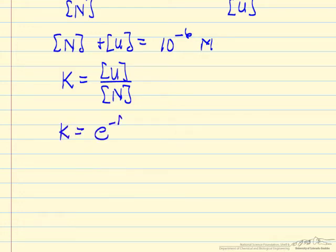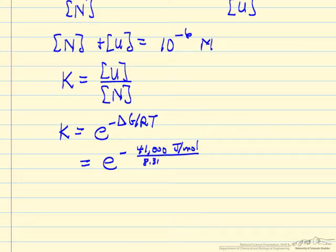The equilibrium constant equals e to the negative delta G divided by the gas constant and temperature. We can calculate K because we are given delta G as 41,000 joules per mole, the gas constant is 8.314 joules per mole per kelvin, and the temperature must be absolute temperature: 273 plus 25, so 298 kelvin. This equals e to the minus 16.55.